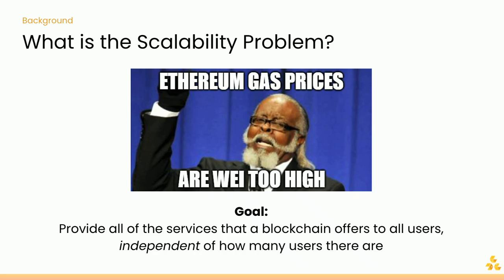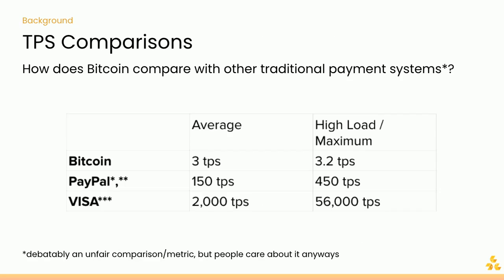If you've tried to use the Ethereum network, you'll see that gas prices are really high. A wei is the smallest unit of Ethereum — like a Satoshi is the smallest unit of Bitcoin. The goal is to provide all blockchain services to all users independent of how many users there are. Bitcoin can handle 3 transactions per second on average; PayPal can handle 150; Visa can handle 2,000. So if three people want to buy coffee at the same second and pay with Bitcoin, that's the maximum Bitcoin can handle — obviously a problem.